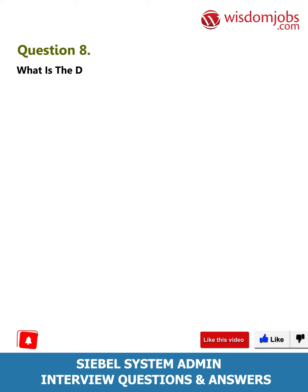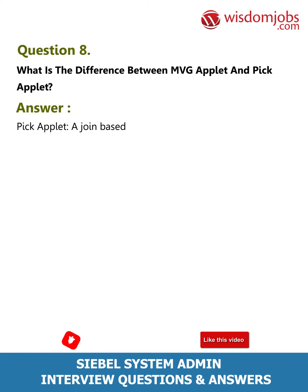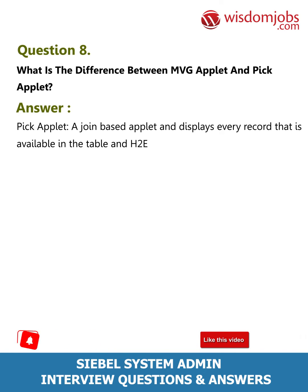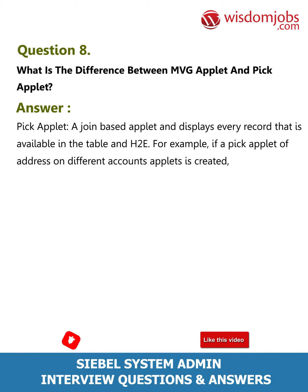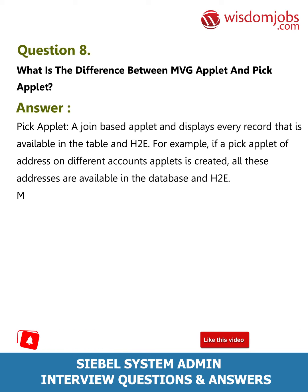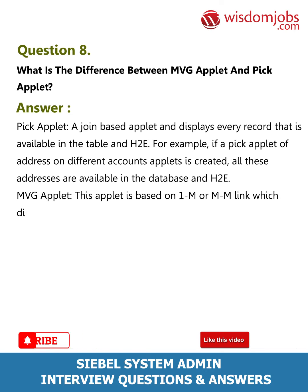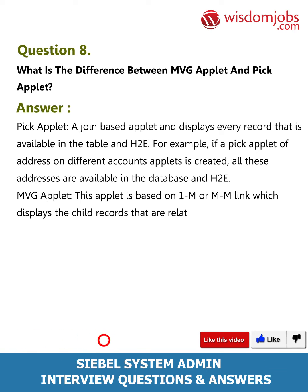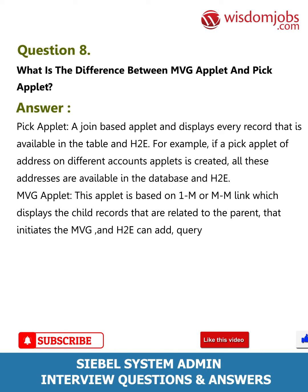Question 8: What is the difference between MVG applet and pick applet? Answer: Pick applet is a join-based applet and displays every record available in the table. For example, if a pick applet of address on different accounts applets is created, all those addresses are available in the database. MVG applet is based on a 1:M or M:M link which displays the child records related to the parent. It can add, query, and delete the records of the MVG.